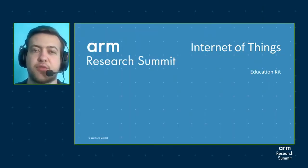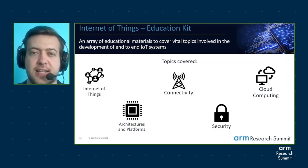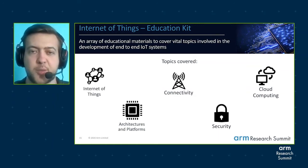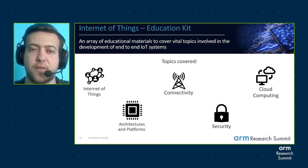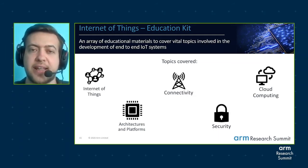The Internet of Things education kit offers an array of educational materials that cover vital topics when considering developing an end-to-end IoT system. The offering comes in the package of PowerPoint lecture slides, lab documents, quizzes, and an exam paper. Some of the most important topics covered are: what is the Internet of Things, how does it work, why did it arise; hardware and platforms; features of embedded systems that are crucial for IoT; IoT system architectures and standards including cloud, edge, and fog computing. Connectivity is obviously a core part of the IoT, and communication protocols such as Bluetooth, BLE, Zigbee, LoRaWAN, and narrowband IoT are covered.